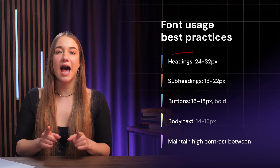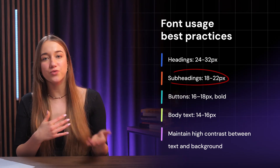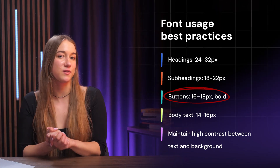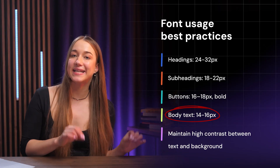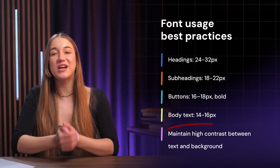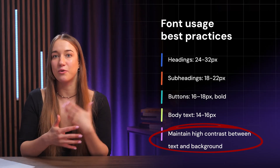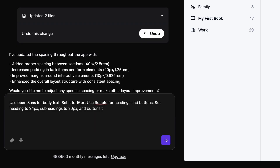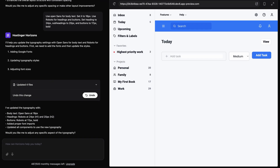With regards to font size and weight, there are a few best practices. Aim to have headings at between 24 and 32 pixels; subheadings should be between 18 and 22 pixels; buttons should be bold and between 16 and 18 pixels; and body text is easiest to read when it's between 14 and 16 pixels. Always maintain high contrast between your text and the background so fonts are easier to read. For my web app I used: Open Sans for body text at 16 pixels, Roboto for headings and buttons, headings at 24 pixels, subheadings at 20 pixels, and buttons at 17 pixels bold. If you don't like the result, just tell Horizons to change the design and keep at it until you love what you see.